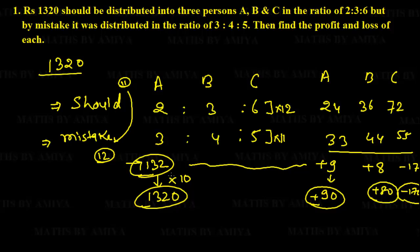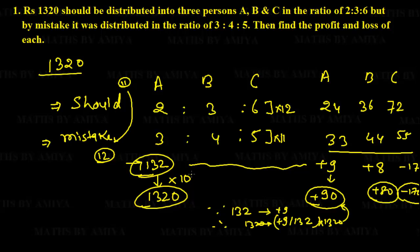We want the answer for Rs. 1320, not 132. By unitary method: if 132 gives profit 9, then 1320 (multiply by 10) gives profit 90. So A is in profit of Rs. 90, B is in profit of Rs. 80, and C is in loss of Rs. 170. The best approach for error problems is to merge should and mistake ratios by cross-multiplying the summation values.